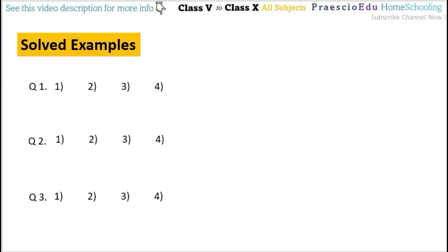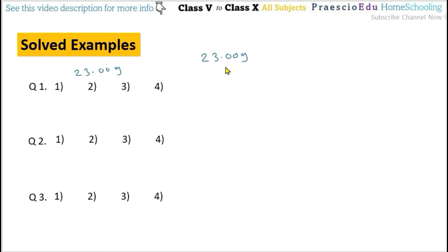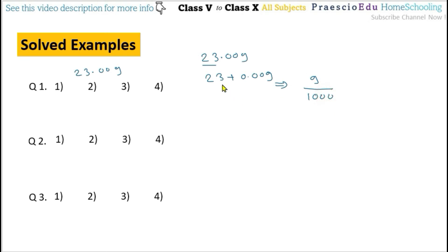Question number one: write the decimal fraction 23.009 as a vulgar fraction. So 23.009, we can split this as 23 plus 0.009. Now this 9 is at the thousandths place, which means we can write it as 9 divided by 1000. So the complete expression is 23 plus 9 by 1000, or in another way, 23 and 9 by 1000.